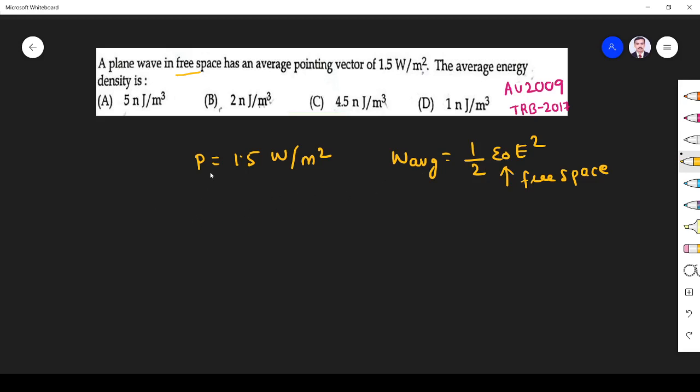I know that P average Poynting vector is given by P average equals 1 by 2 e h. I take a scalar value because the power is given as scalar. So that is equal to 1.5, so e h is equal to 3.